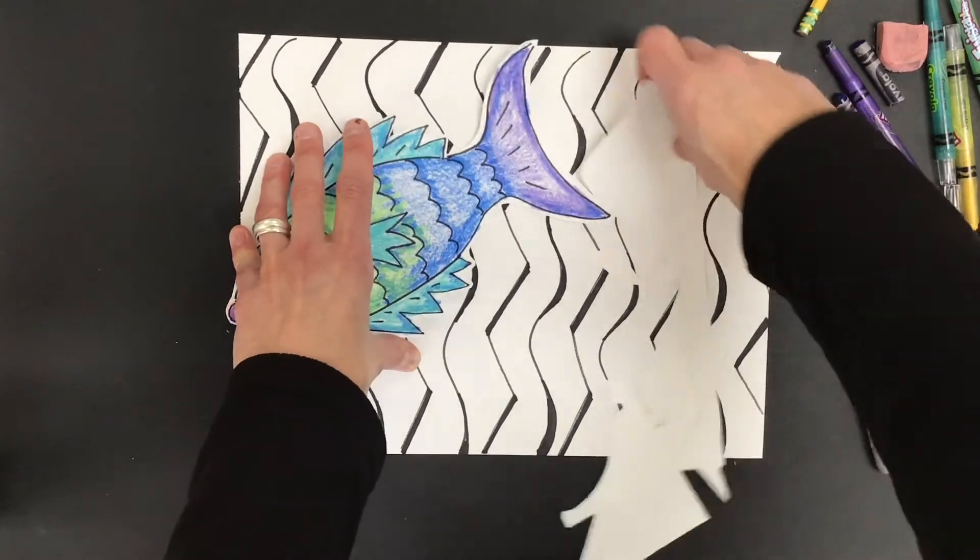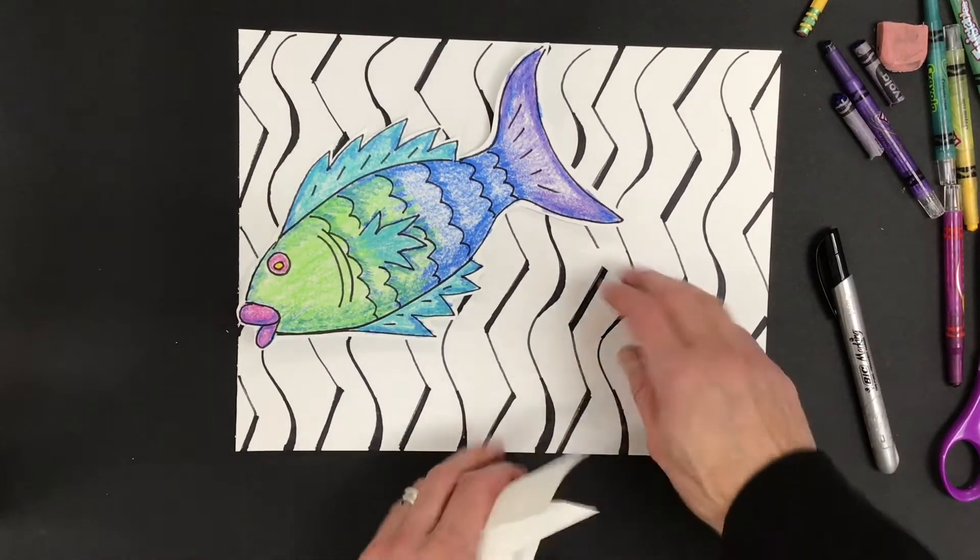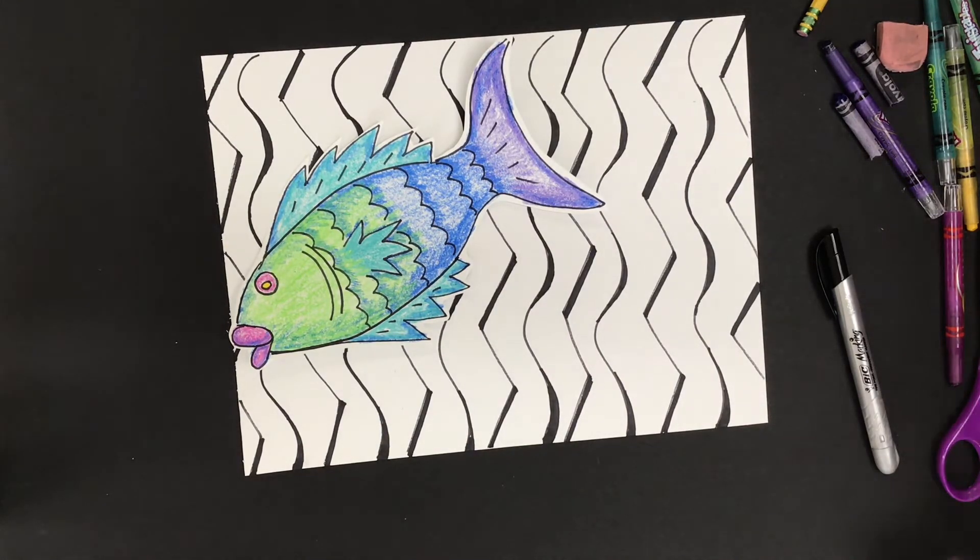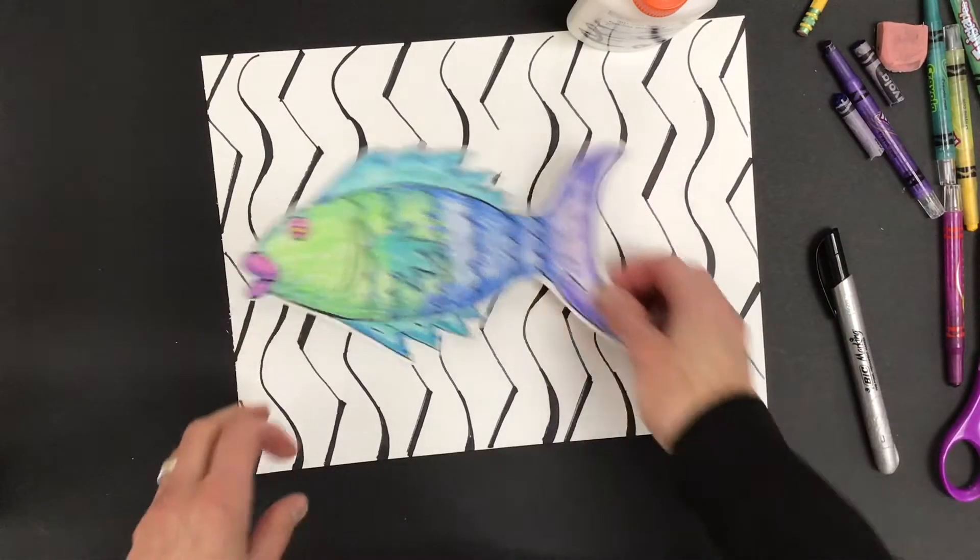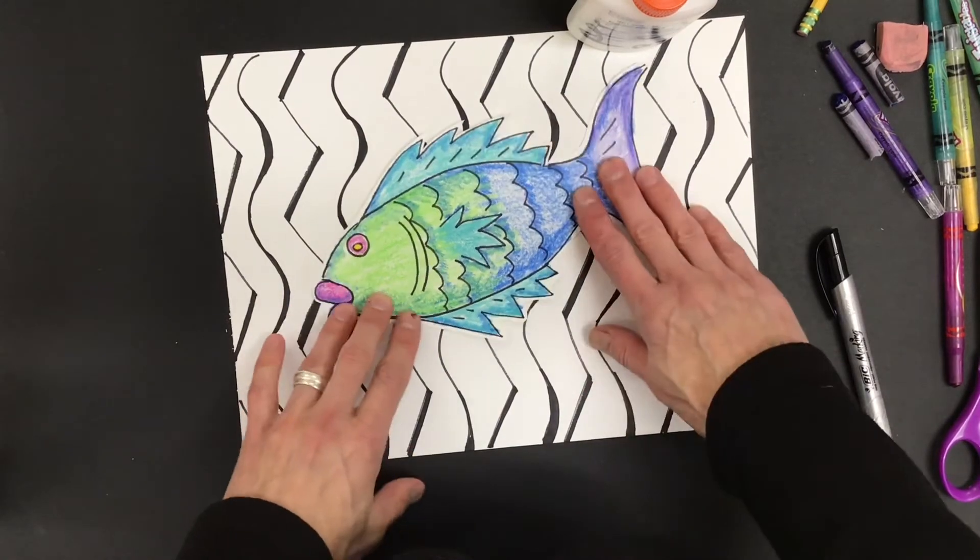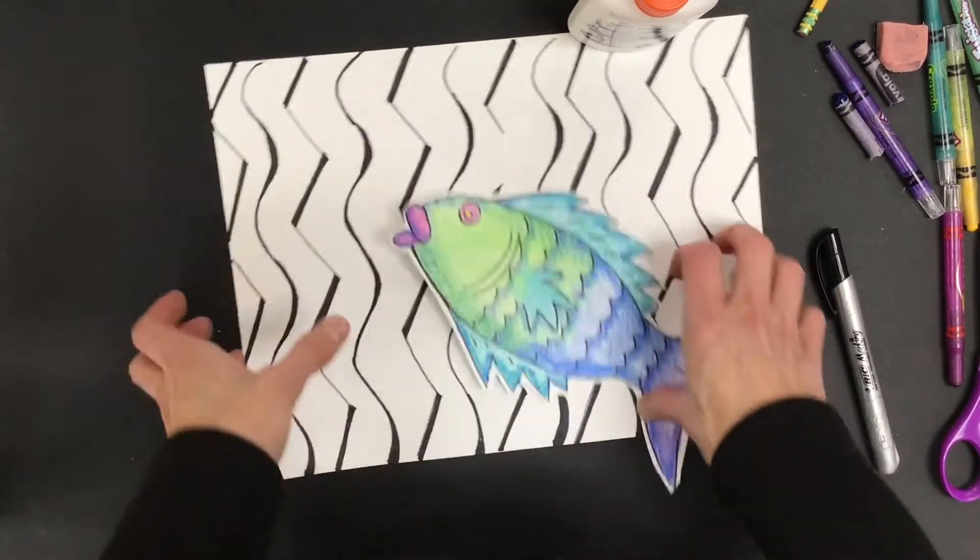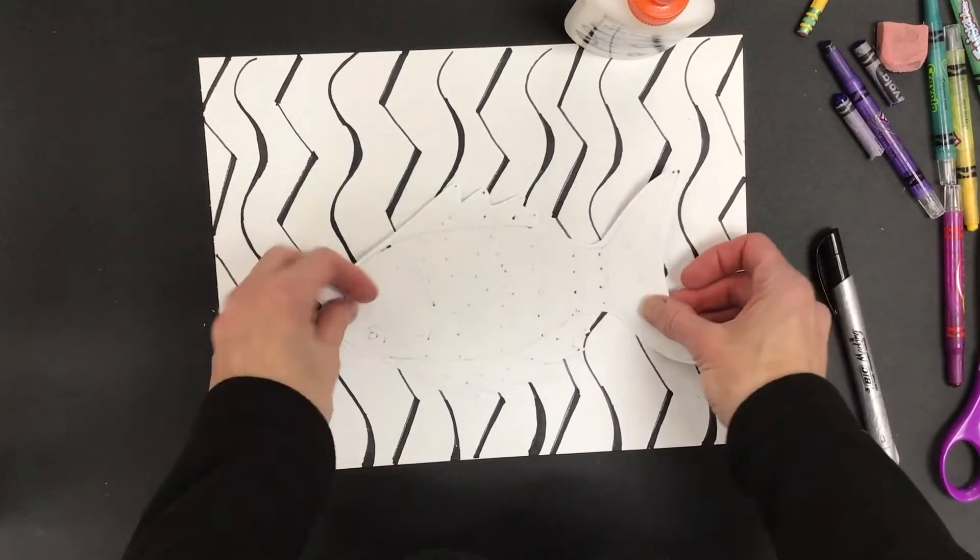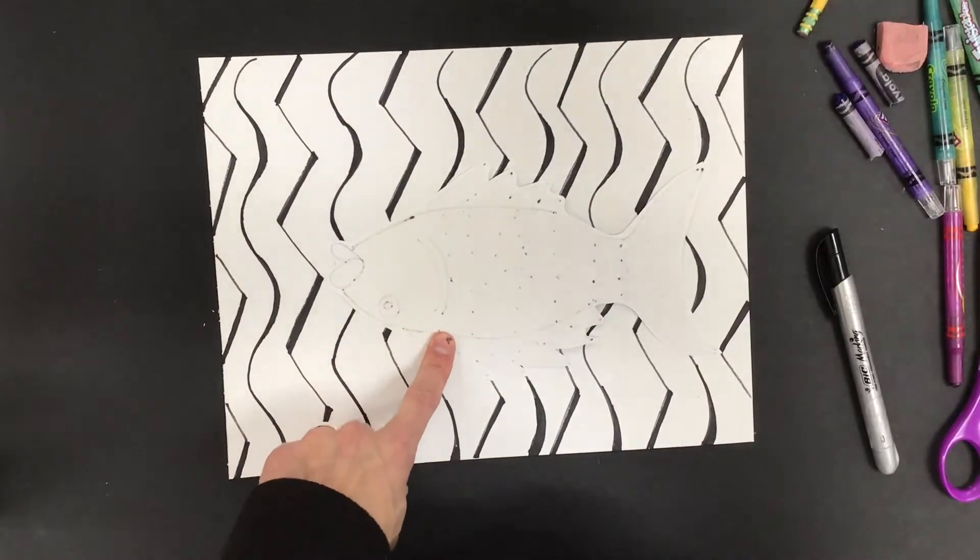All right. I'm going to put my scraps in the recycling. Keep clean before I move on to the next step. And I'm going to need some glue. So here I go. I have my fish and I get to glue it down to this patterned paper that I made. So I'm going to turn my fish over. Turn my glue bottle over.